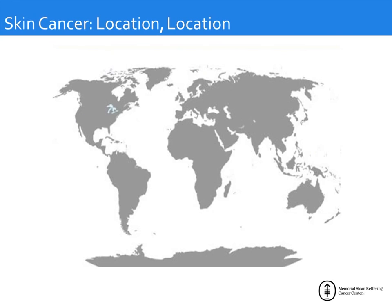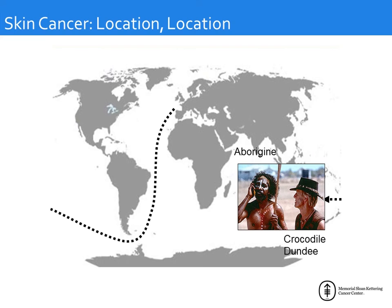Australia has the highest incidence of skin cancer because when people from Ireland were sent there centuries ago, their skin had not evolved to be in a place so close to the equator. That is why Aboriginal individuals from Australia do not have skin cancer, whereas the Irish arrivals are responsible for the highest rate of skin cancer in the world — their skin is not adapted to that environment.